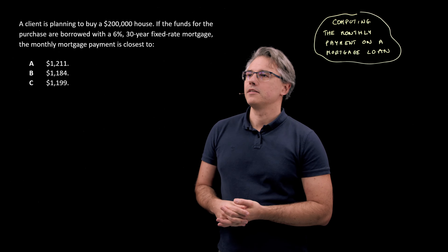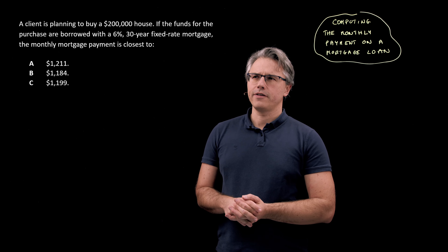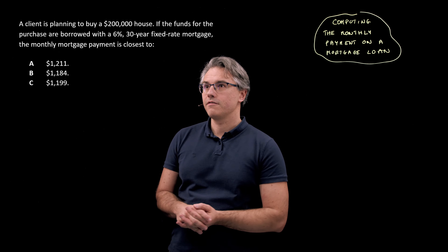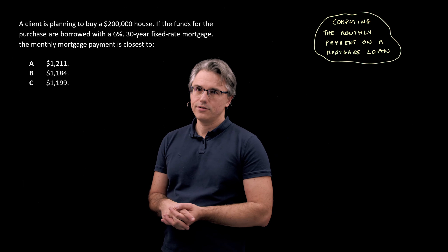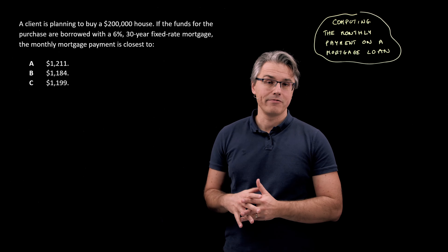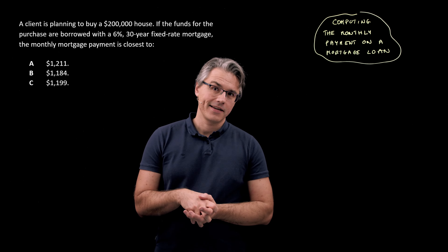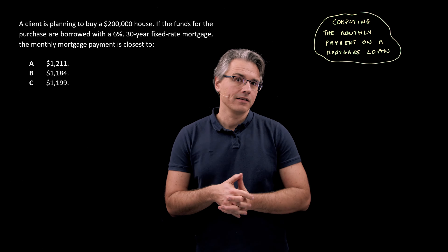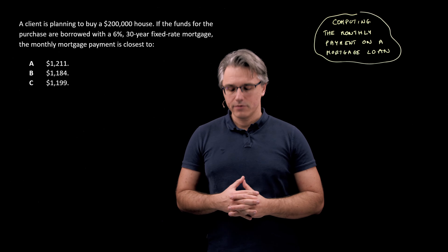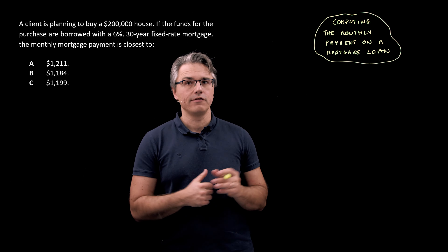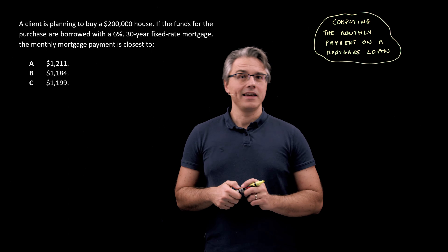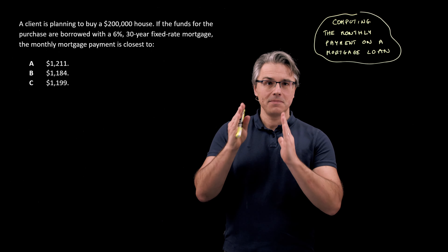So this is the question: a client is planning to buy a $200,000 house. If the funds for the purchase are borrowed with a 6%, 30-year fixed rate mortgage, the monthly mortgage payment is closest to? I'm assuming the client receives 100% of the funding for the house, which is not necessarily realistic — in an actual question you may have some equity, with the client contributing a portion and the bank financing the rest. However, in this case we're looking at the full $200,000.